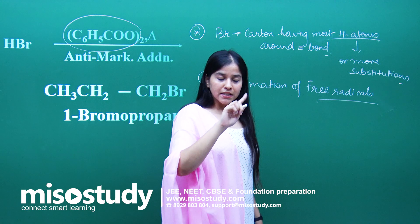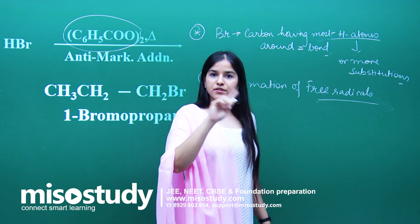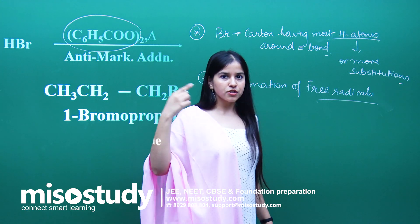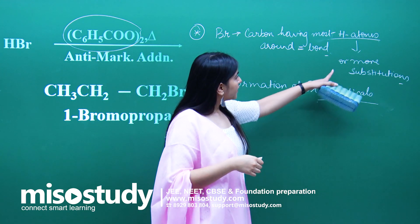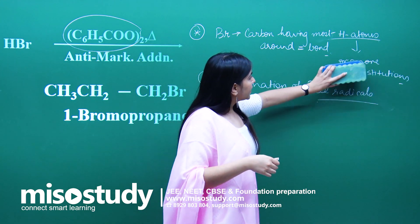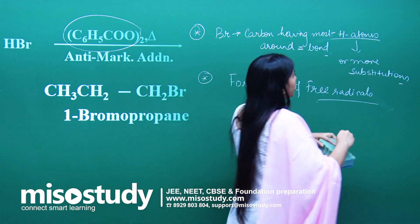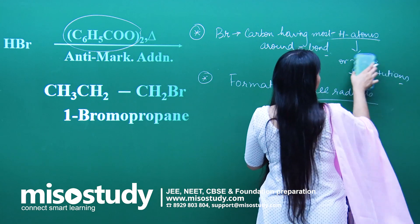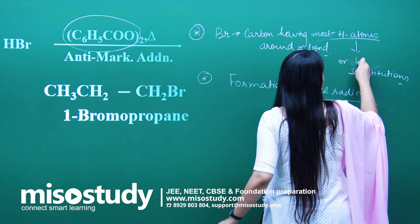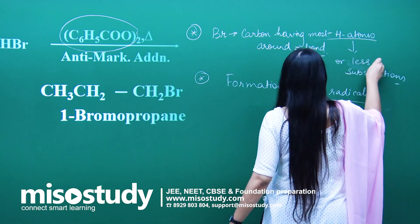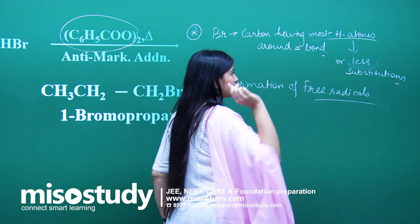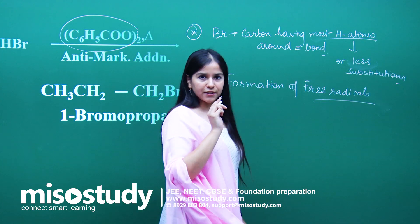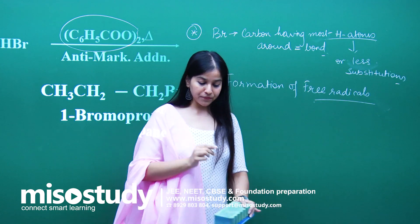Always remember, everything happens around the double bond, not beyond that. In anti-Markovnikov's rule, bromine gets attached to the carbon having the most hydrogen atoms around the double bond — that is, the less substituted carbon — which is the opposite of Markovnikov's rule.